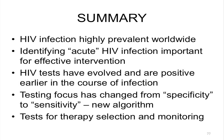In summary: HIV infection is still highly prevalent worldwide. Identifying acute HIV infection is the word of the day — it's important to intervene at that stage to prevent transmission and even prevent latency and subsequent disease in the individual patient. HIV tests have evolved and are positive earlier in the course of disease. Testing is now focused more on sensitivity than specificity, though we still want both. And tests for therapy selection and monitoring are also available.